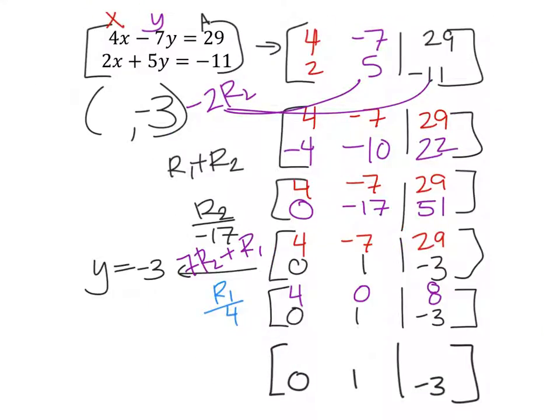Row 1 divided by 4. 4 divided by 4 is 1. 0 divided by 4 is still 0. And then 8 divided by 4, that's a 2. And this tells us then that x is 2, which we can put in our ordered pair.